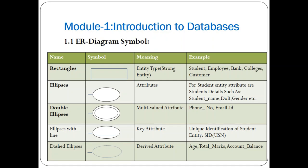The next symbol is an ellipse with a line, called a key attribute. If any attribute is the primary key of the entity type, it is represented using an ellipse with a line. For example, in a student entity, the student ID or USN is a primary key, and such an attribute is represented with an ellipse with a line.